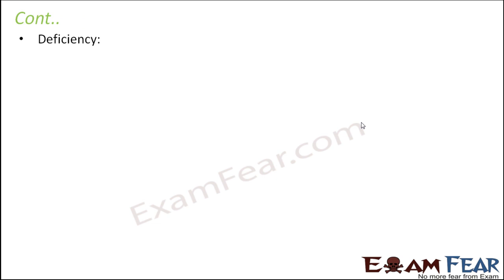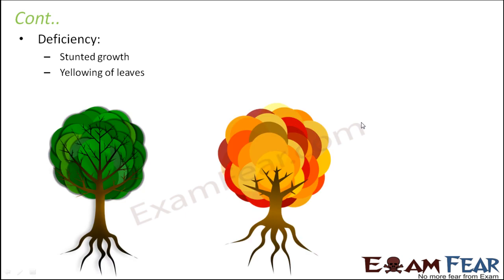Regarding deficiency — what can happen if a plant doesn't have enough nitrogen — there will be stunted growth, because nitrogen plays a primary role in plant growth. Another symptom is yellowing of leaves. By looking at the plant, you can see it is deficient in some mineral. For nitrogen deficiency, the leaves will start to become yellow, and if nitrogen is not made available in any form, gradually the entire plant can turn yellow.